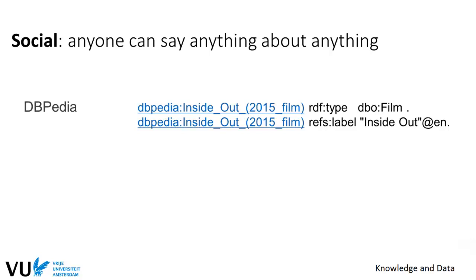I can just for example publish these triples that Inside Out is a film and it has a label Inside Out in English and it's a some different name in German and in Dutch I believe.